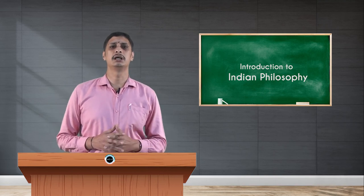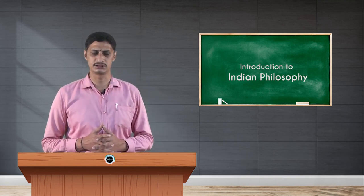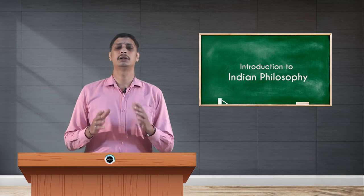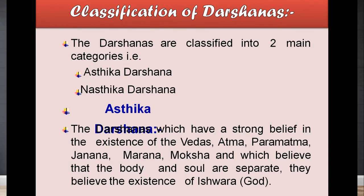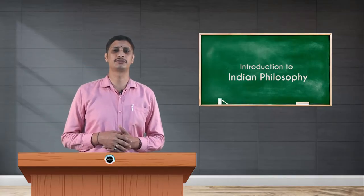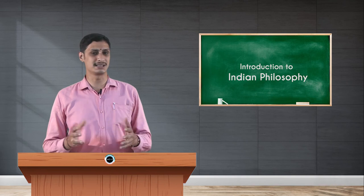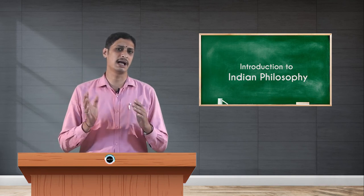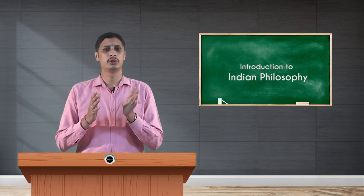A philosophy based on Vedas is named as Asthika Darsana, and a philosophy based on other literatures is named as Nasthika Darsana. There are six Darsanas based on Asthika and three systems of philosophy based on Nasthika. Those who accept the Vedas and those who do not accept the Vedas are both accepted in Indian philosophy.